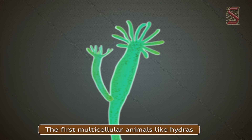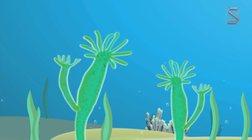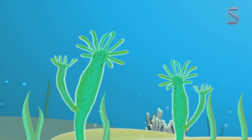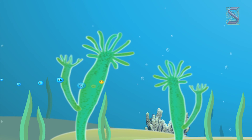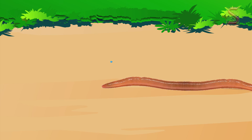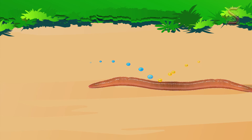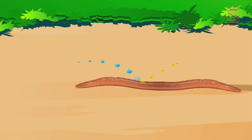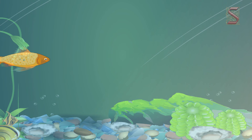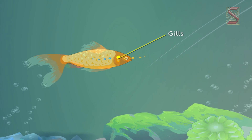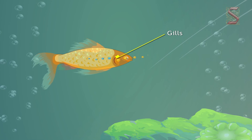The first multicellular animals like hydras that lived in the oceans were only two cells thick, so all cells could still get oxygen molecules from the surrounding water and get rid of carbon dioxide the same way. The first animals that were thicker than that, like earthworms, needed some way to get oxygen to inside cells that were not in contact with water.